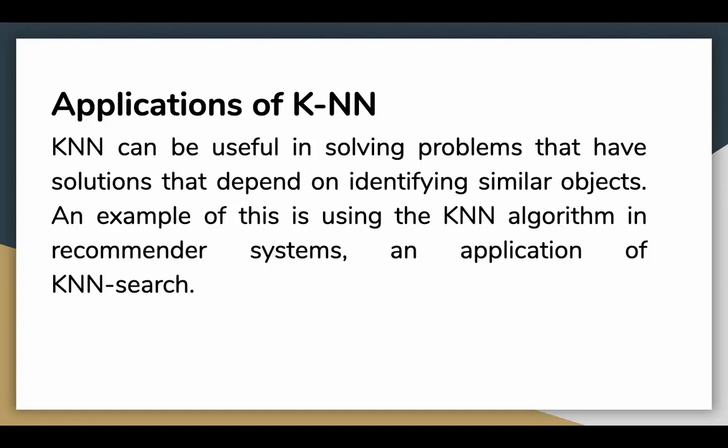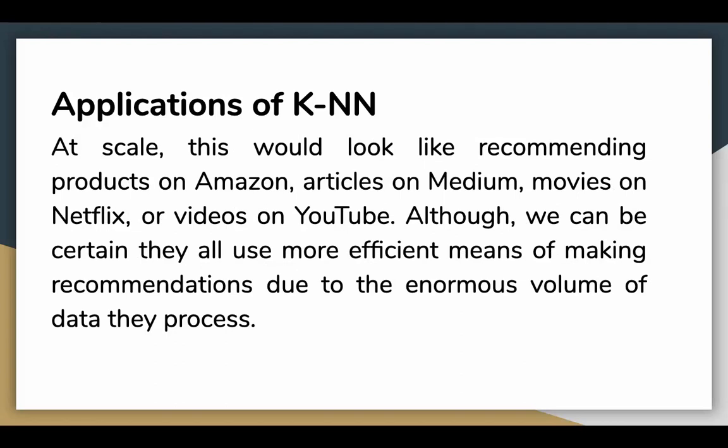An example of using this would be in recommender systems, which is an example application of KNN search. At a large scale, this would look like recommending products on Amazon, articles on Medium, movies on Netflix, although we can be certain that these companies all use more efficient means of making recommendations due to the enormous volume of data. When you have an enormous volume of data, that is when KNN starts to suffer.